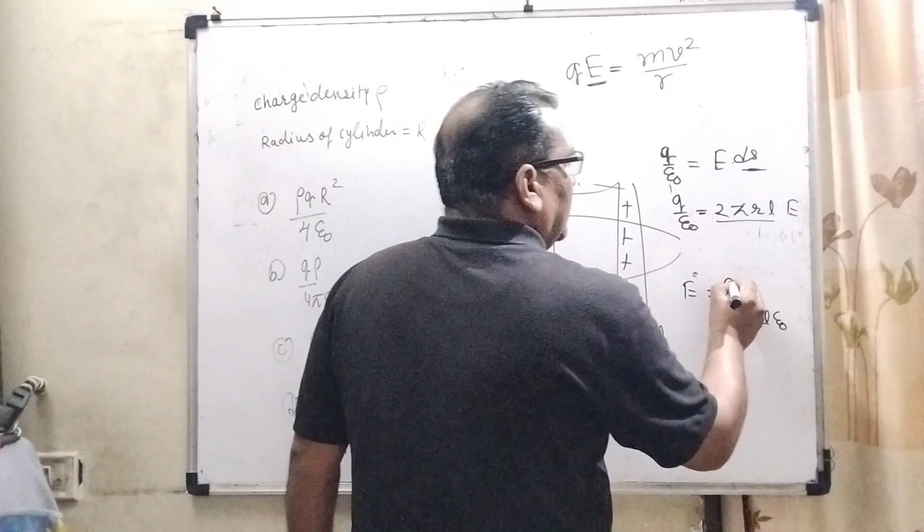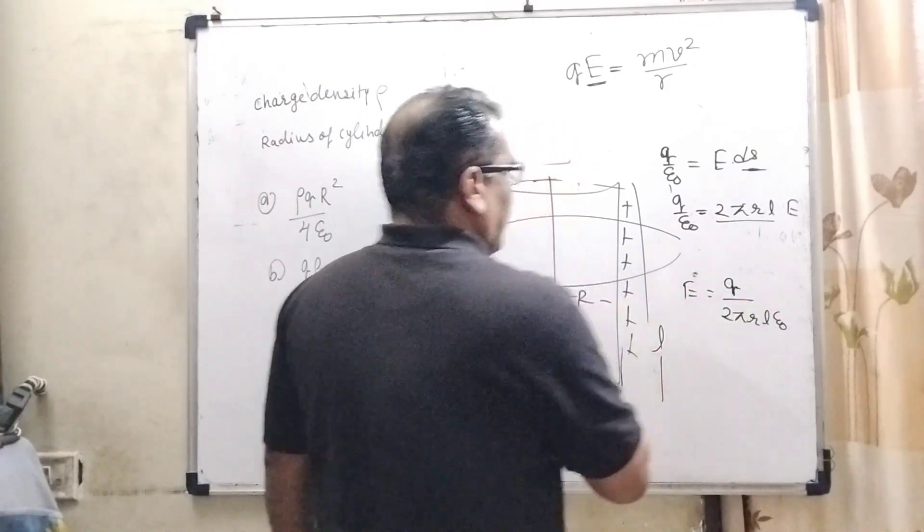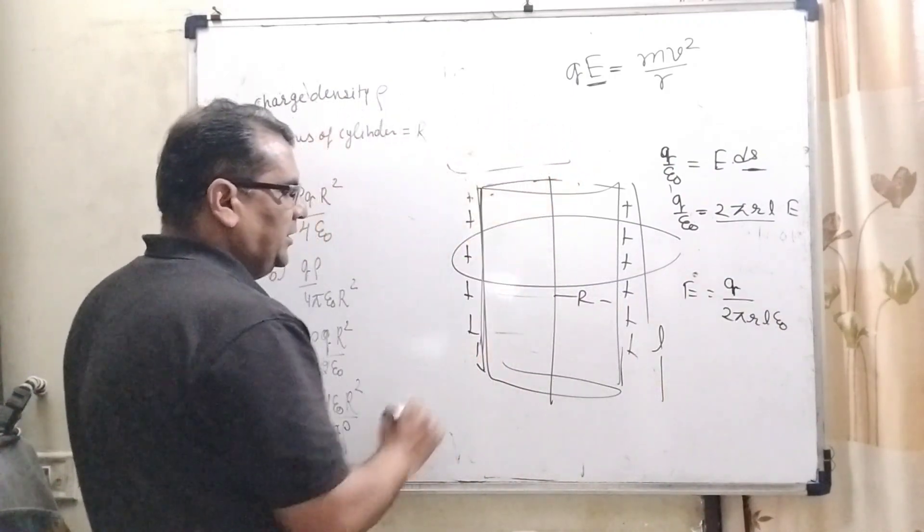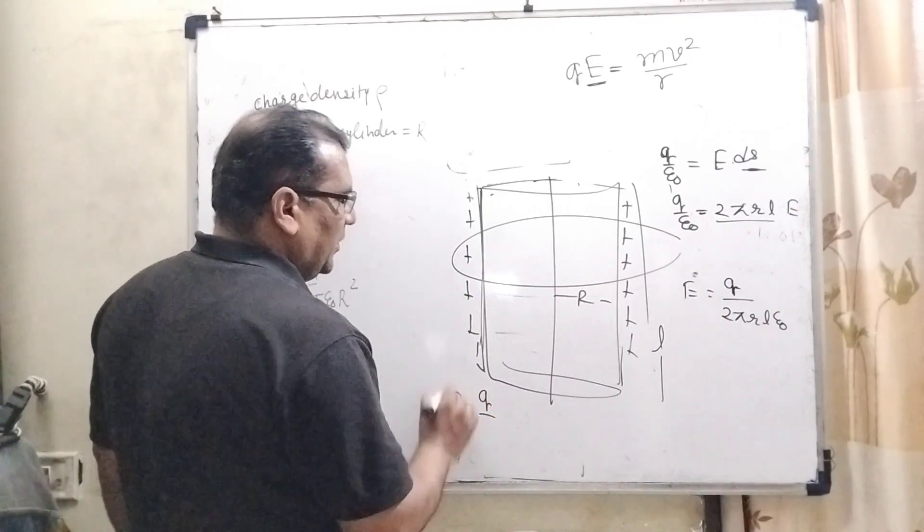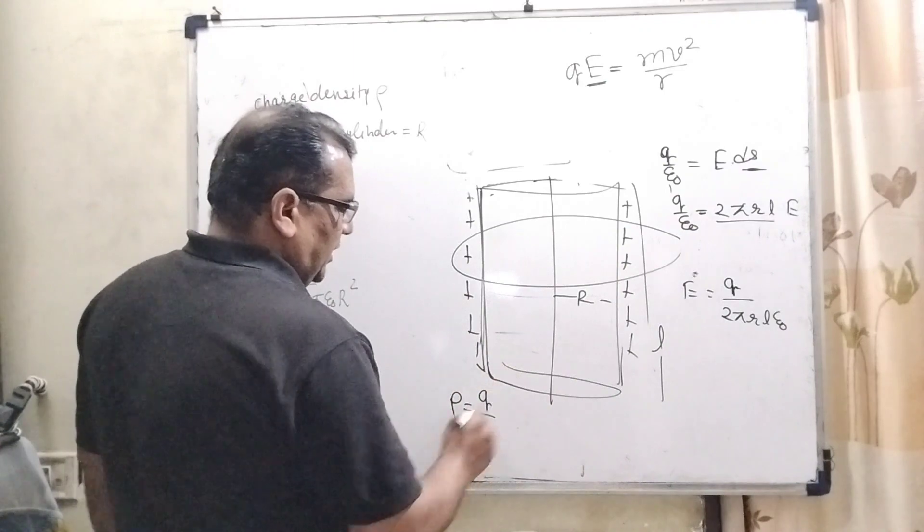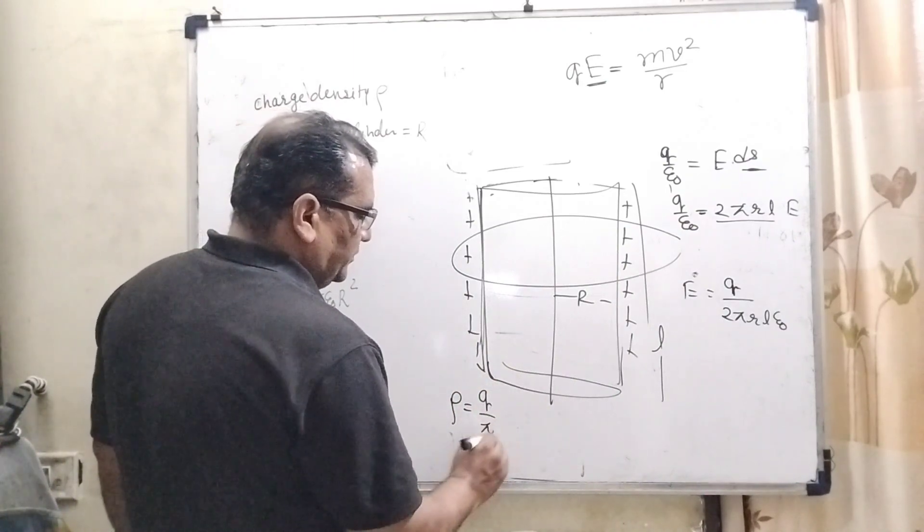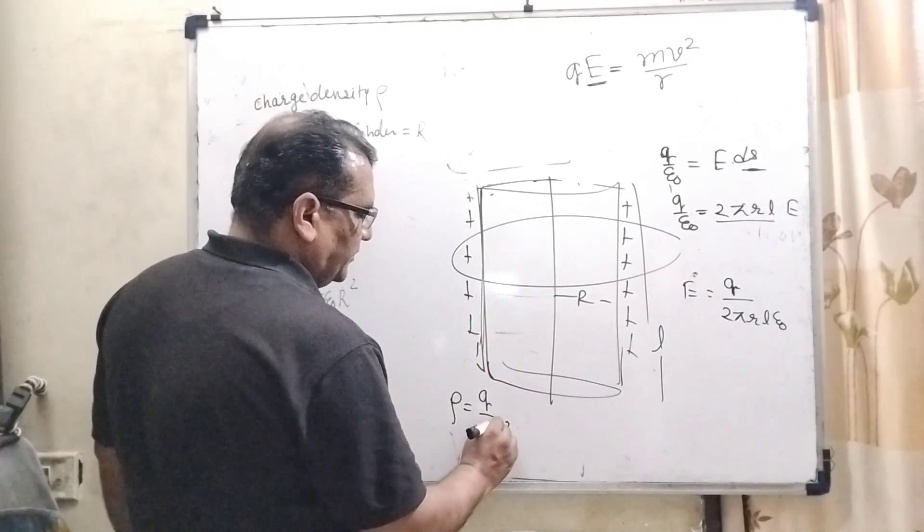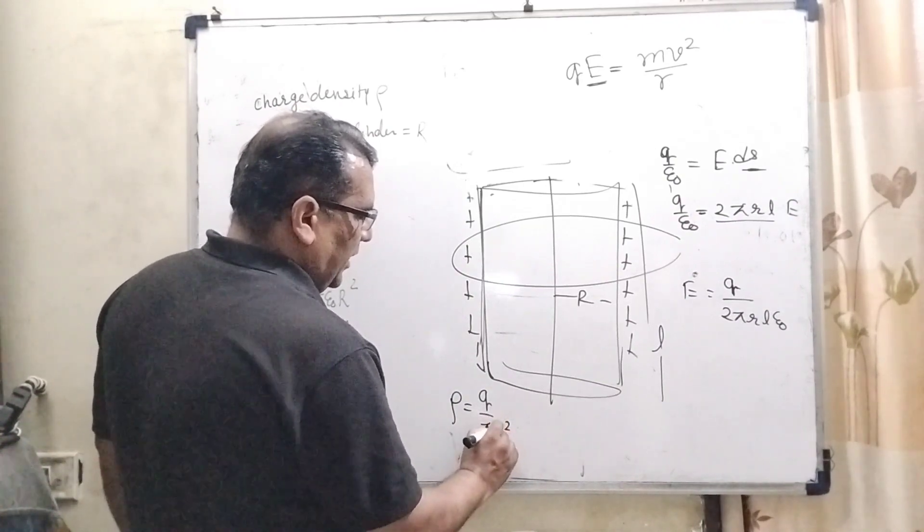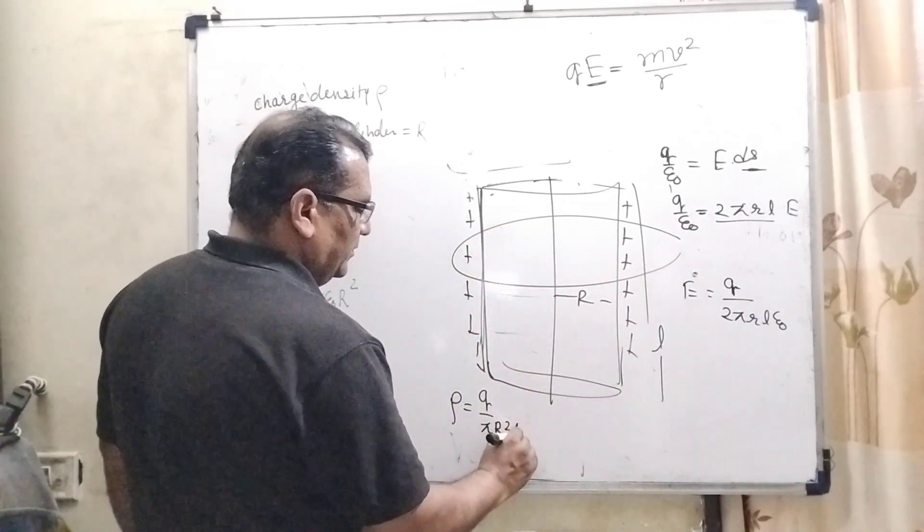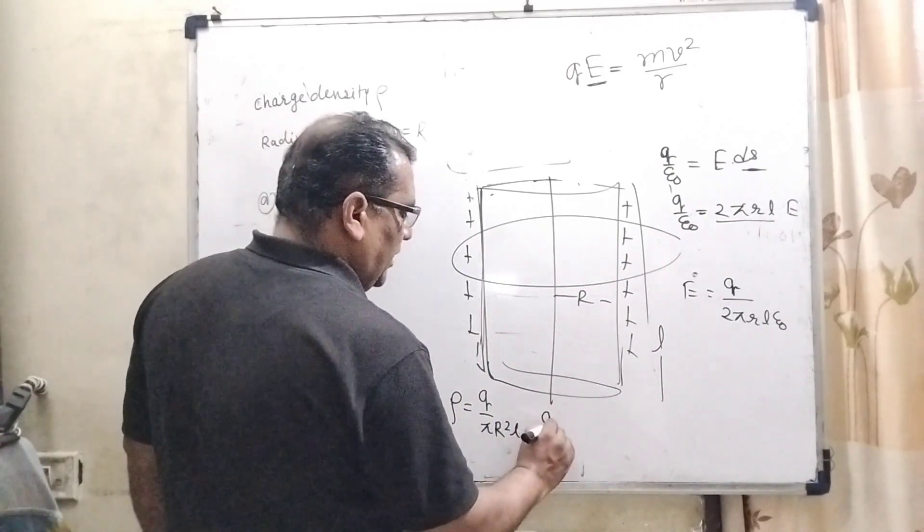Now here, Q can be written as - as we know that for a volumetric body, charge density ρ equals charge upon volume of the cylinder. So ρ = Q/πR²L. So Q can be written as Q = ρπR²L.